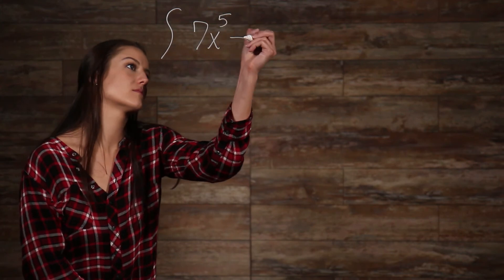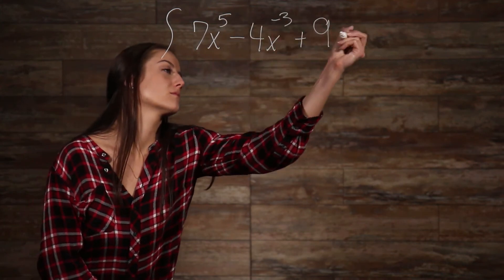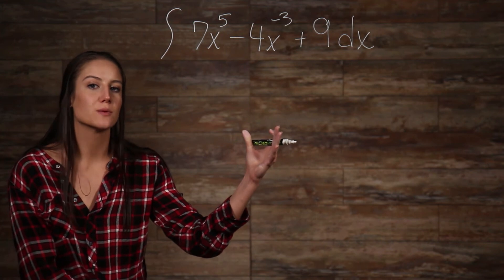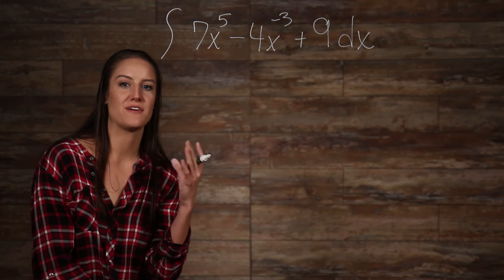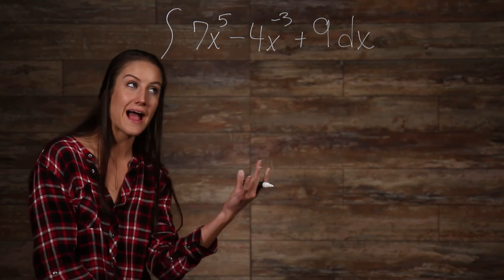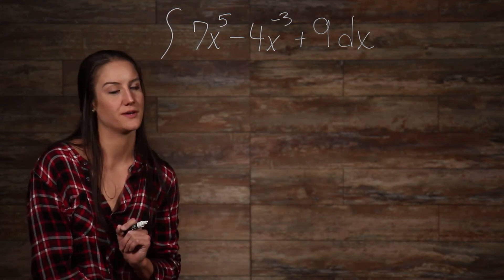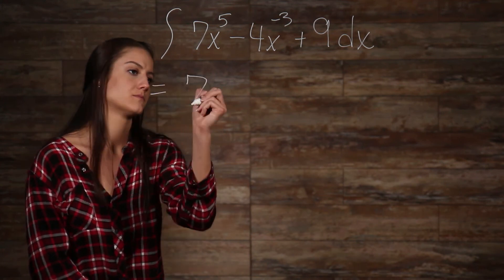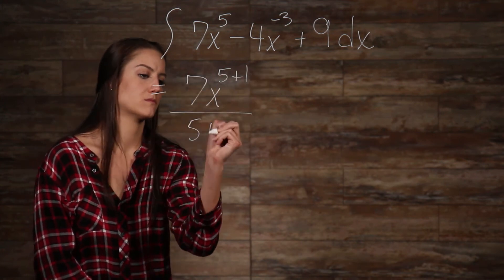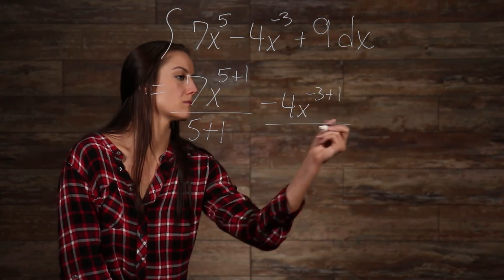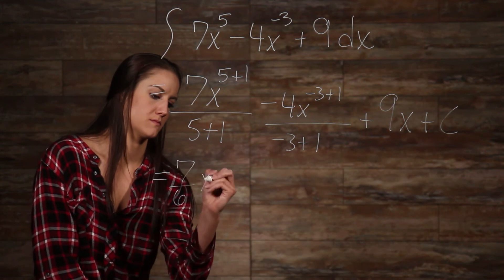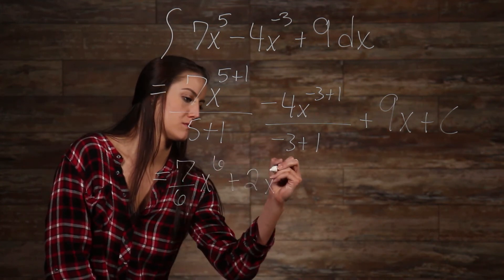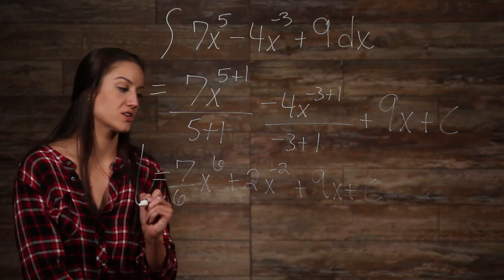So, let's work through a couple different examples. Because we are adding and subtracting our terms, we can integrate each term individually. On our first two terms, we can apply the power of x integral formula, and on our 9, we can apply our integral of a constant formula. And here is our answer.